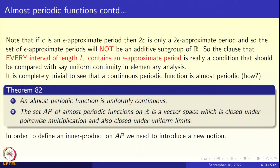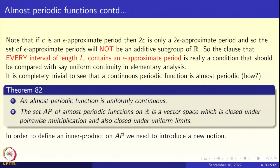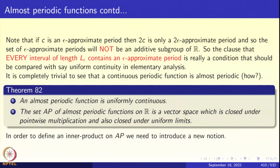So unlike the periodic case, epsilon approximate periods will not form an additive subgroup of R. The clause in the definition that every interval of length L_epsilon contains an epsilon approximate period is significant — it is a strong uniformity condition. No matter where this interval of length L_epsilon is located, you will find an epsilon approximate period inside it. You should compare this with the definition of uniform continuity in elementary analysis; it is exactly an analog.